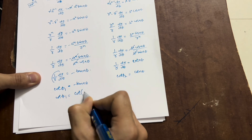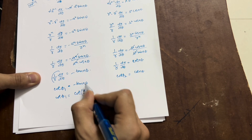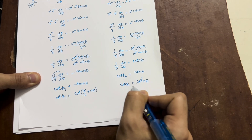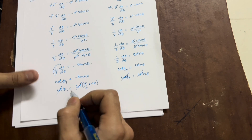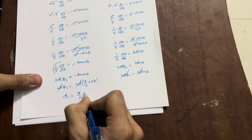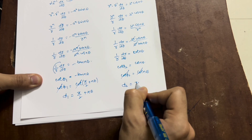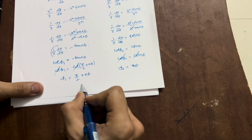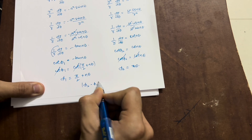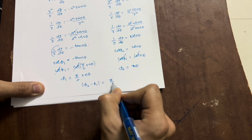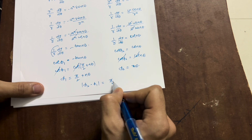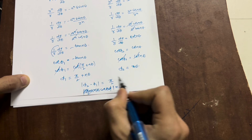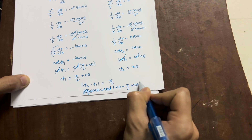We can write −tan(nθ) as cot(π/2 + nθ), so cot φ₁ = cot(π/2 + nθ), which gives φ₁ = π/2 + nθ. For the second equation, cot φ₂ = cot(nθ), so φ₂ = nθ.